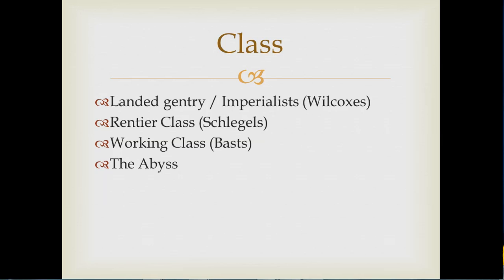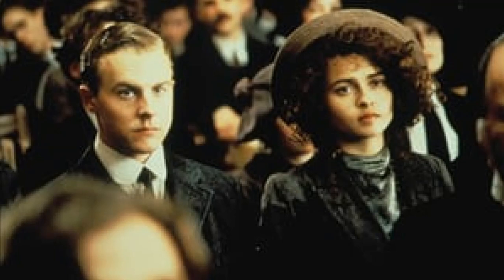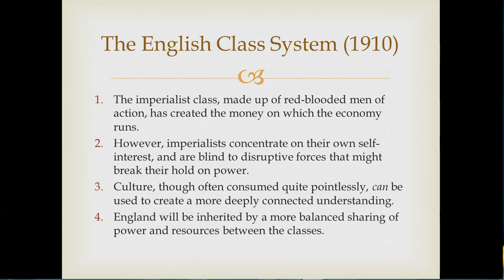It's not a comprehensive socialist picture, though, because as the narrator famously informs us, we're not concerned with the very poor. This may well be because Forster did not have enough experience of the abyss himself to be able to write convincingly about it. But the novel, nonetheless, comes from the liberal tradition. By looking at how characters respond to their circumstances, we can identify that the most prominent concern of the novel is the class system and the relationships between classes. The thread of argument goes something like this: the imperialists, though they have created the economy, have concentrated on their own self-interest and are blind to the goblins that will disrupt the social hierarchy. Culture can point the way to a more open and connected understanding, leading to a more equitable sharing of power and wealth between the classes.